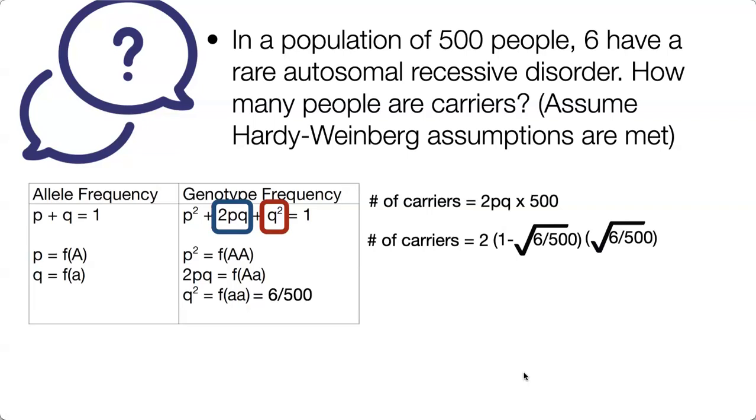p plus q equals 1, and we can rearrange that equation so that p is equal to 1 minus q. So that's how we've come up with 2pq here on your screen, and we'll add the 500 as well.